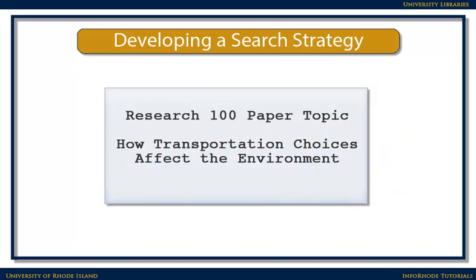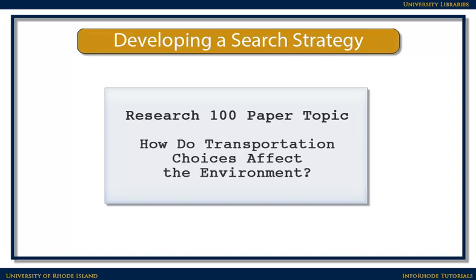Suppose the topic for your paper is on how transportation choices affect the environment. First, transform your topic into a question: How do transportation choices affect the environment? Identify the major concepts in this question. In this case, our first major concept is transportation, and our second major topic is environment.